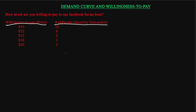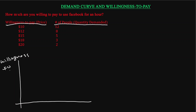From this information we can draw what you call a willingness to pay curve. Let's put willingness to pay on the y-axis — you can think of this as also the price they are willing to pay. We mark $20, $18, $15, $12, and $10 on the y-axis.